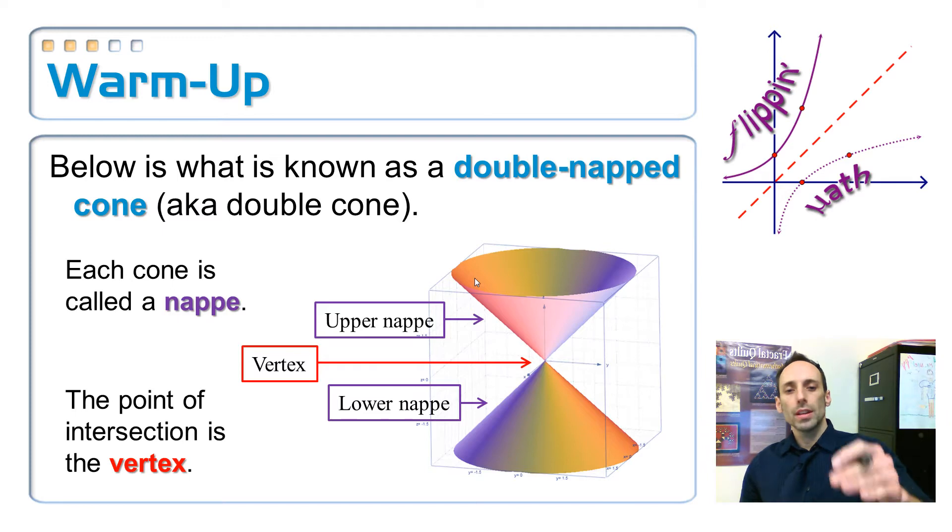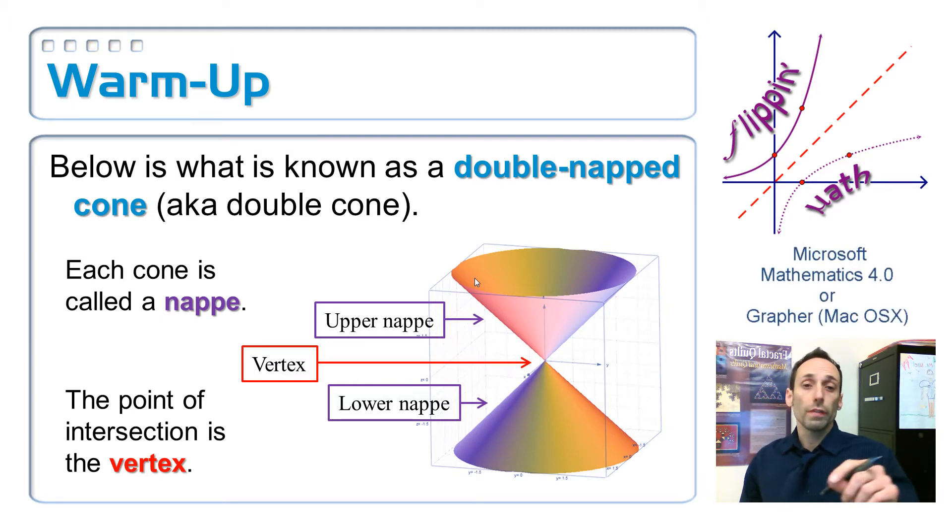Now what we're going to do is we're going to take that double cone, and we're going to slice it up in a whole bunch of different ways, and make some graphs that, well, some of them you've seen before, but maybe some of them are going to be completely fresh. Before I do, let me show you something on Microsoft Mathematics 4, which is a free PC piece of software that you could download for free, and then type in this equation so that you can get yourself a double nap cone, and you can twirl it around and make it look real cool. So let's take a second and look at that.